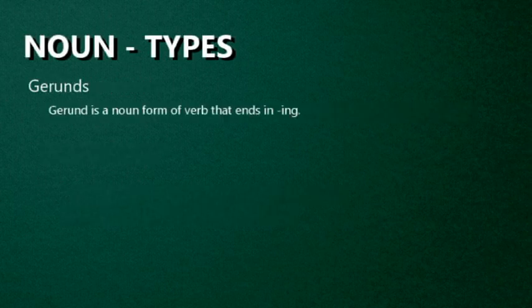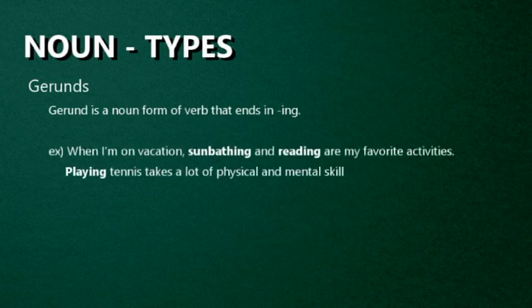Gerunds. A gerund is a noun that is identical to the present participle of the verb — the -ing form. They are typically nouns that describe the same activity as a verb but function as nouns, such as driving, formed from the present participle of drive. A gerund is a noun form of a verb that ends in -ing. For example: When I am on vacation, sunbathing and reading are my favorite activities — sunbathing and reading are the gerunds. Playing tennis takes a lot of physical and mental skills — playing is a gerund.